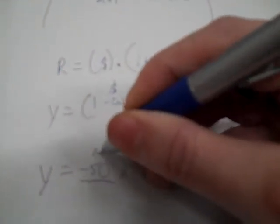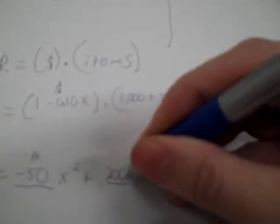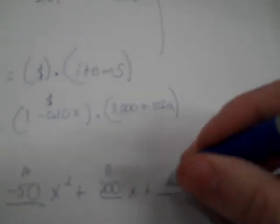Okay, so I get negative 50x to the second, that's my a. And then 200x, 200's my b. Whatever's in front of the x to the first is the b. x second's a, and then 3,000.